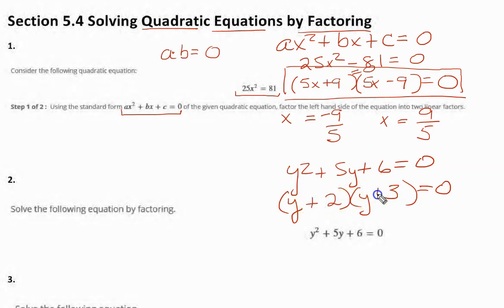They're both going to be plus, equal each of these factors to 0. So, here we're going to get y equals, just transpose, negative 2. And here, y equals negative 3. Okay, again, we're showing you a protocol now of how to solve quadratic equations by factoring.